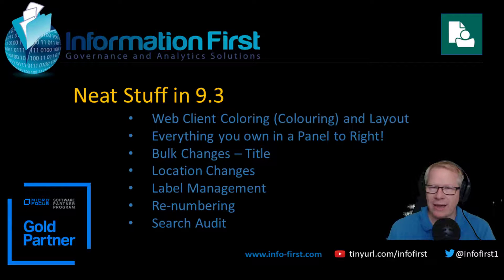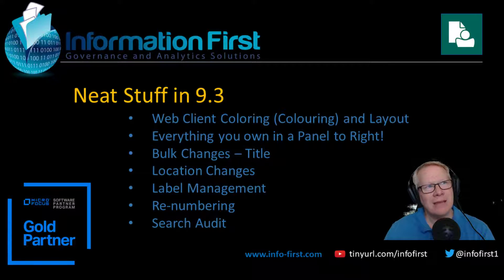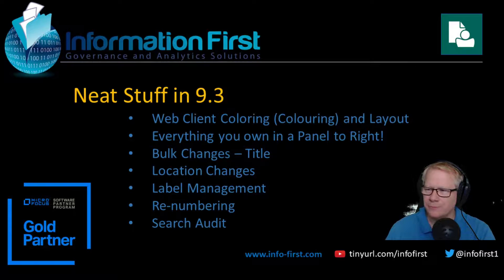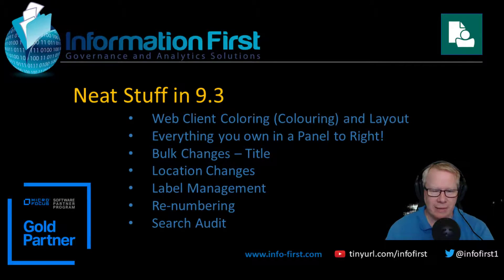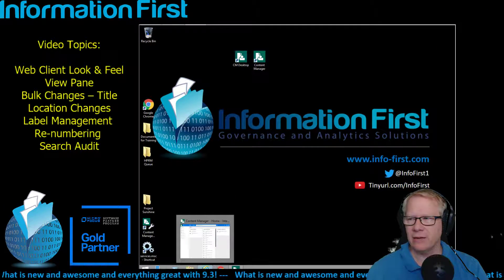While in the desktop client, we're going to look at some bulk changes you can do, such as title amendment, record number changes, and location management. Renumbering is a big one — if you had documents based on container numbering and somebody misfiled it, the record number still reflected that mistake, but that's been changed now and the record number can be updated. Finally, some of you might be interested in the search audit capability.